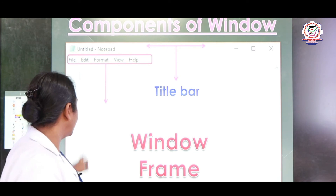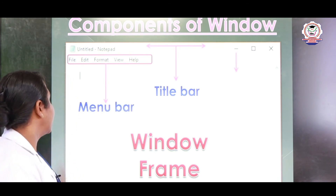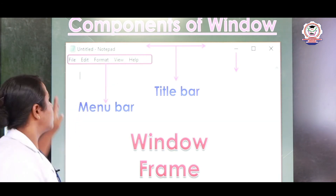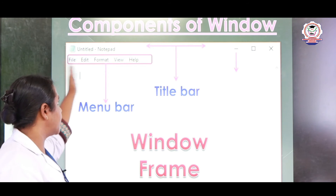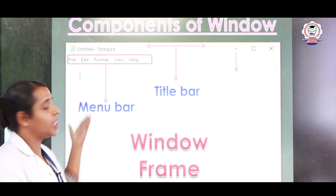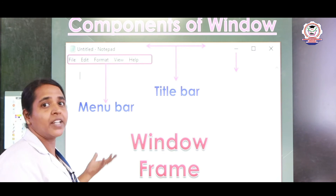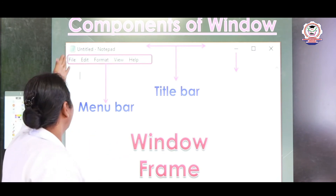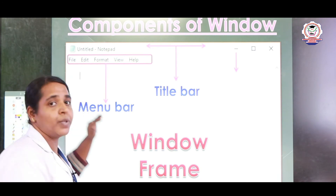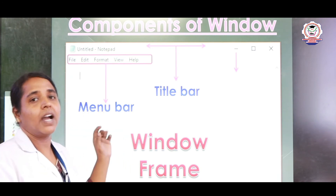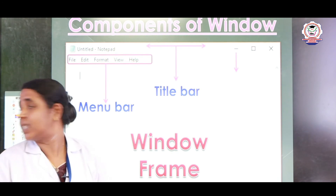Next we can move to the menu bar. What is the menu bar? It includes all the menus. You can see file, edit, format, view, and help options — these are all the menu options. If you want to create a new file you click File and then New. If you want to edit, you click Edit and then select cut, copy, paste, or whatever you want.